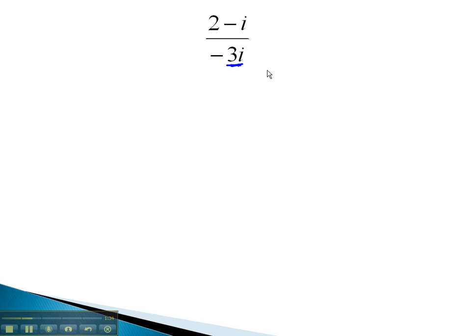Again, we only have one term, so to get rid of the i, we simply have to multiply by i, doing the same thing in the numerator.